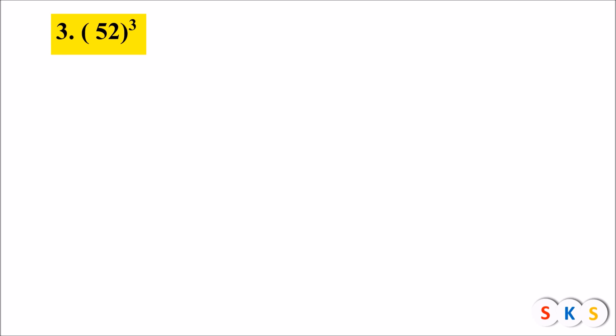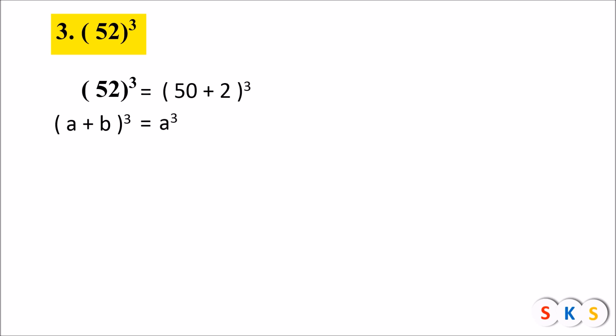Next question: find the cube of 52. We write 52³ as (50 + 2)³. This is now in the form (a + b)³, so we use the formula a³ + 3a²b + 3ab² + b³, with a = 50 and b = 2.